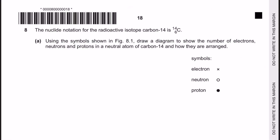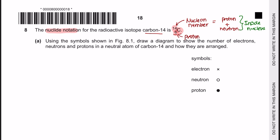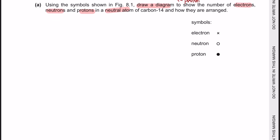Next question 8: The nuclide notation for the radioactive isotope carbon-14 is ¹⁴₆C. The number at the top represents the nucleon number, which is the total of protons and neutrons added together. The number at the bottom represents the proton number in this atom. Question part A: Using the symbol shown in figure 8.1, draw a diagram to show the number of electrons, neutrons and protons in a neutral atom of carbon-14. So we have 6 protons.